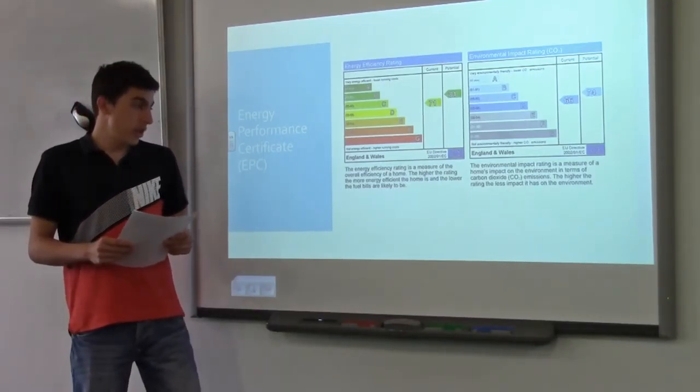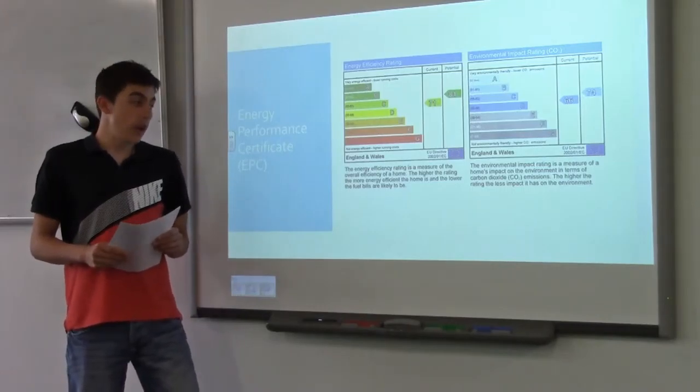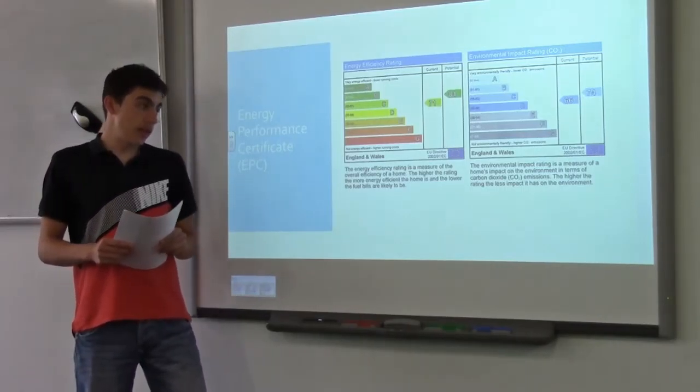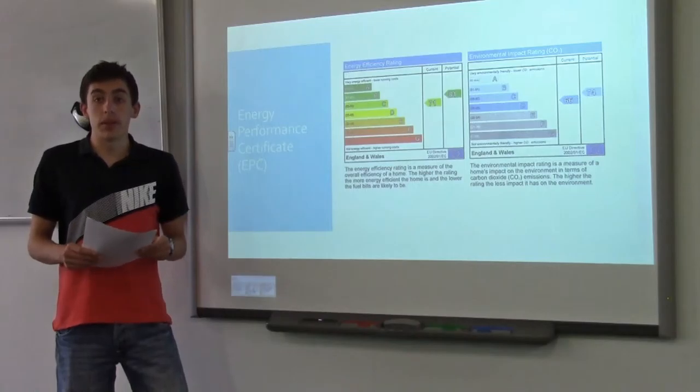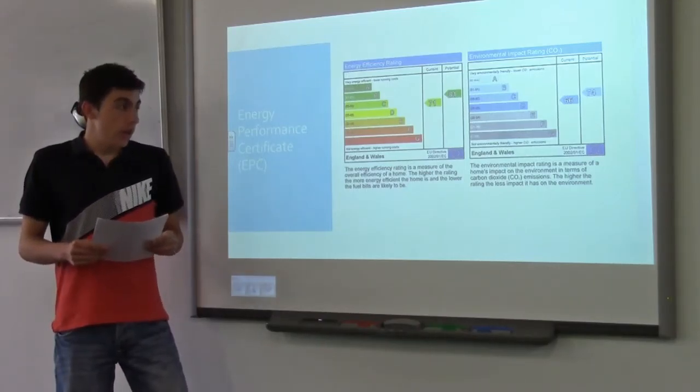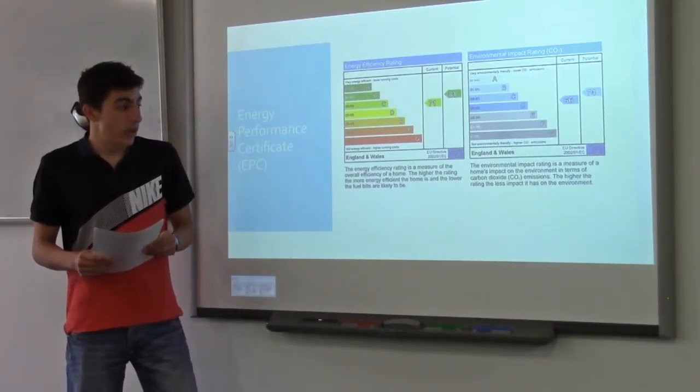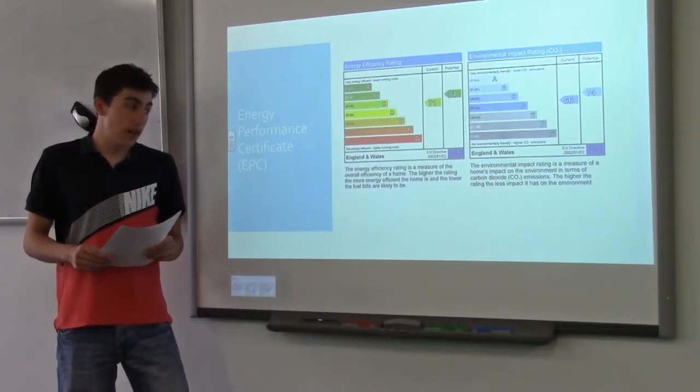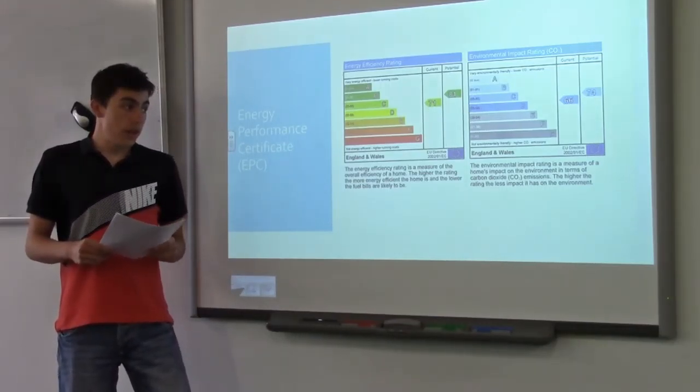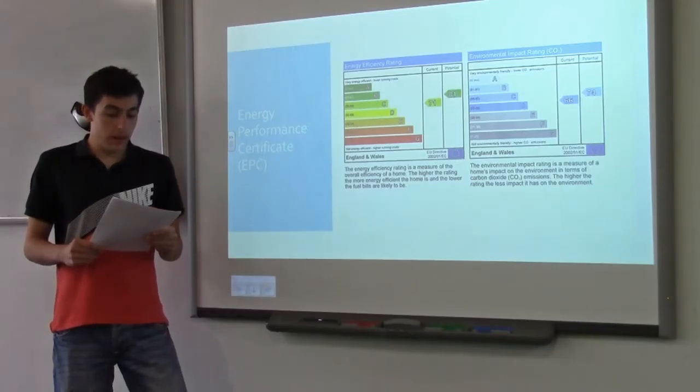Energy efficiency rating is a measure of the overall efficiency of a home. The higher the rating, the more energy efficient the home is, and the lower the fuel bills are likely to be. The environmental impact rating is a measure of the home's impact on the environment in terms of carbon dioxide emissions. The higher the rating, the less impact it has on the environment.